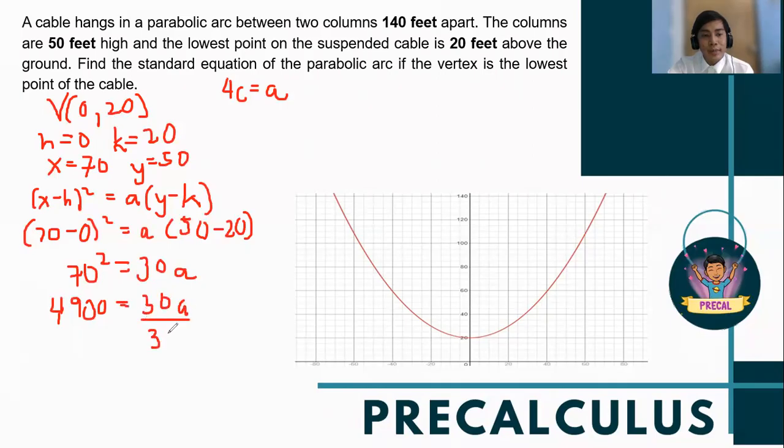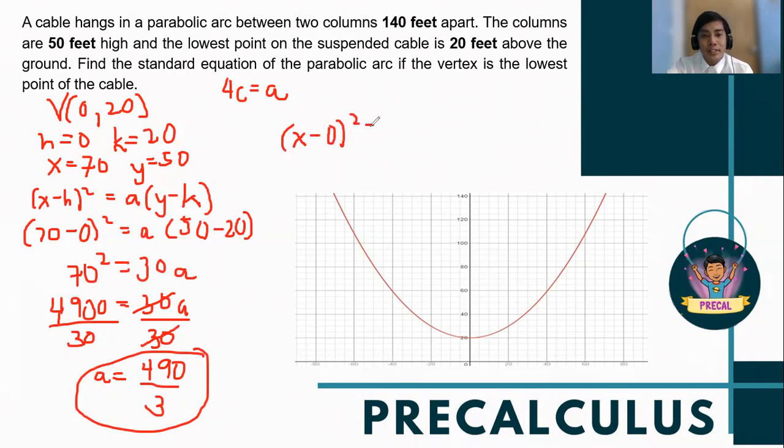Dividing both sides by 30. So our a value now is 4900 divided by 30. So the common factor is divided by 10. So that is 490 over 3. Forming now the standard equation, we will have (x - 0)² = (490/3)(y - 20).